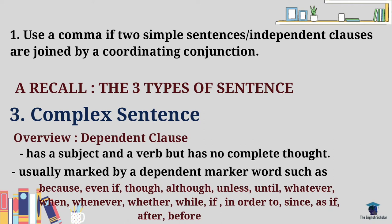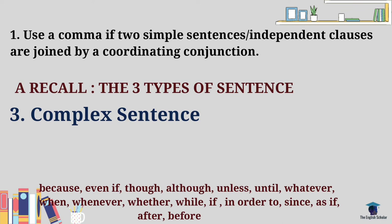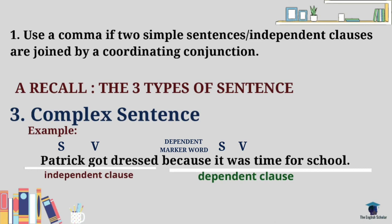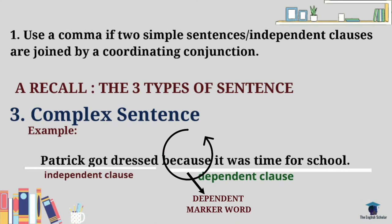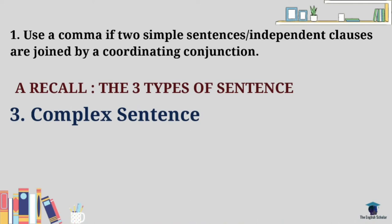Other dependent marker words include: in order to, since, as if, after, and before. In the example sentence, the dependent clause is marked by 'because.' In this type of sentence — the complex sentence — we do not use a comma.